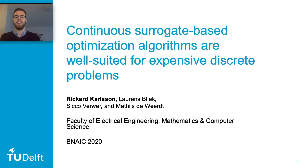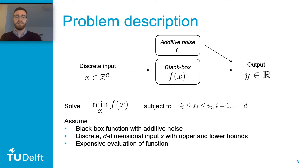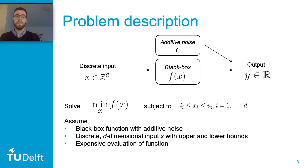Let's jump straight into it and see what problem we face. We're looking at the discrete black box optimization problem where we have some discrete input x, some black box objective function f, and some output y where we have added additive noise. The task is to minimize the objective function f considering some constraints of x where it's upper and lower bounded. We're making some assumptions here — the black box assumption, the fact that x is discrete, but we also have another very important assumption which is that the objective function is expensive to evaluate.